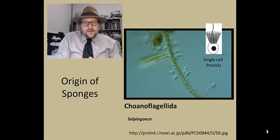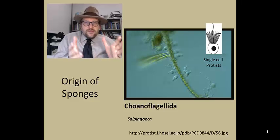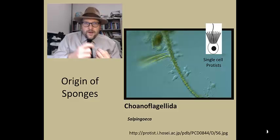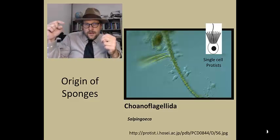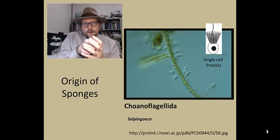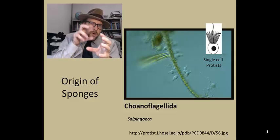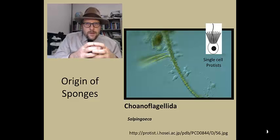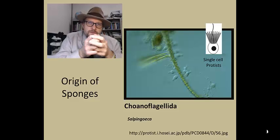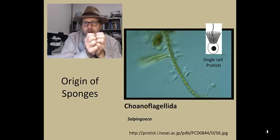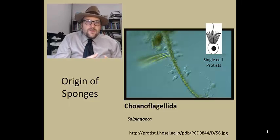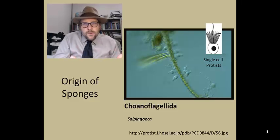The origin of sponges is thought to lay close to a group of single-celled organisms called the choanoflagellates. These are single-celled eukaryotic organisms that travel in the water by swirling a flagella or tail. These flagellates are surrounded by a collar that traps bacteria and other small organisms, which are consumed by these single-celled organisms. It is thought that perhaps a group of these choanoflagellate cells started to group together as colonies, and that was beneficial to their joint survival.